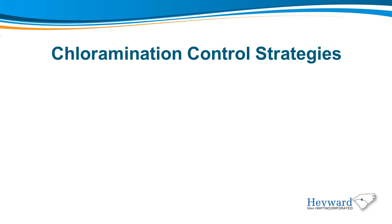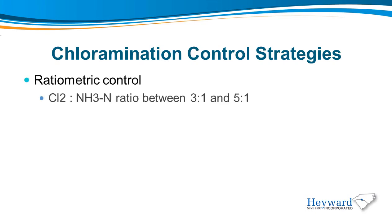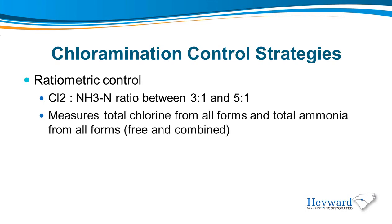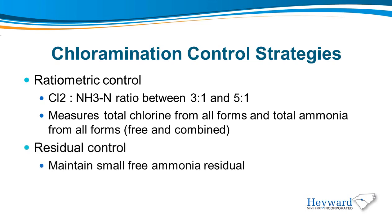There are two main chloramination control strategies. The first is ratiometric control, where the chlorine to ammonia ratio is between 3-to-1 and 5-to-1. We measure the total chlorine in all forms and total ammonia in all forms, free and combined, and calculate the ratio. The second is residual control, which uses a very small ammonia residual and maintains a target monochloramine. Online analysis is required to optimize either of these control strategies.